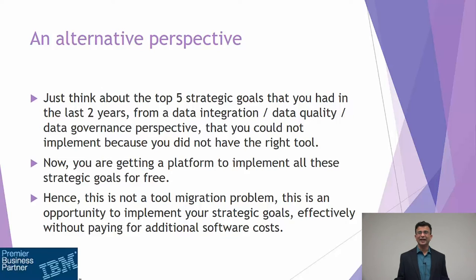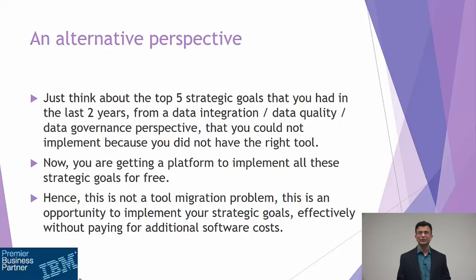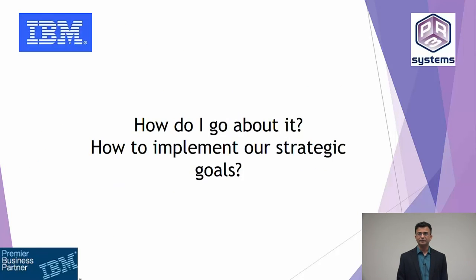Whenever you think like that, suddenly a lot of opportunities open up because you can see the business advantage that you can get by having an integrated data dictionary. You can see the business advantage that you get from having a data quality process. You can see the business advantage which comes from having the overall data lineage and data governance platform. You are also worried about single version of truth — you have got a solution for all of those challenges that you could not solve till yesterday. So when you look at this migration from a strategic perspective, this is a phenomenal opportunity. But how do I go about it? I understand that this is a great opportunity, but what should be the process so that we can leverage these features to achieve our strategic goals?